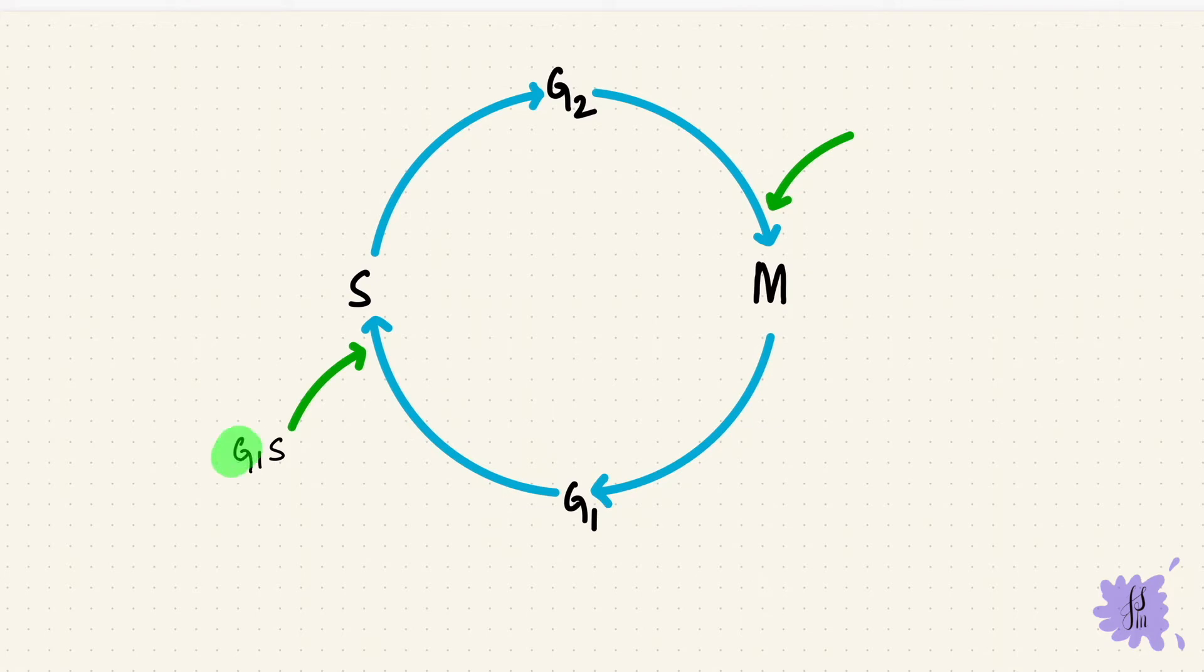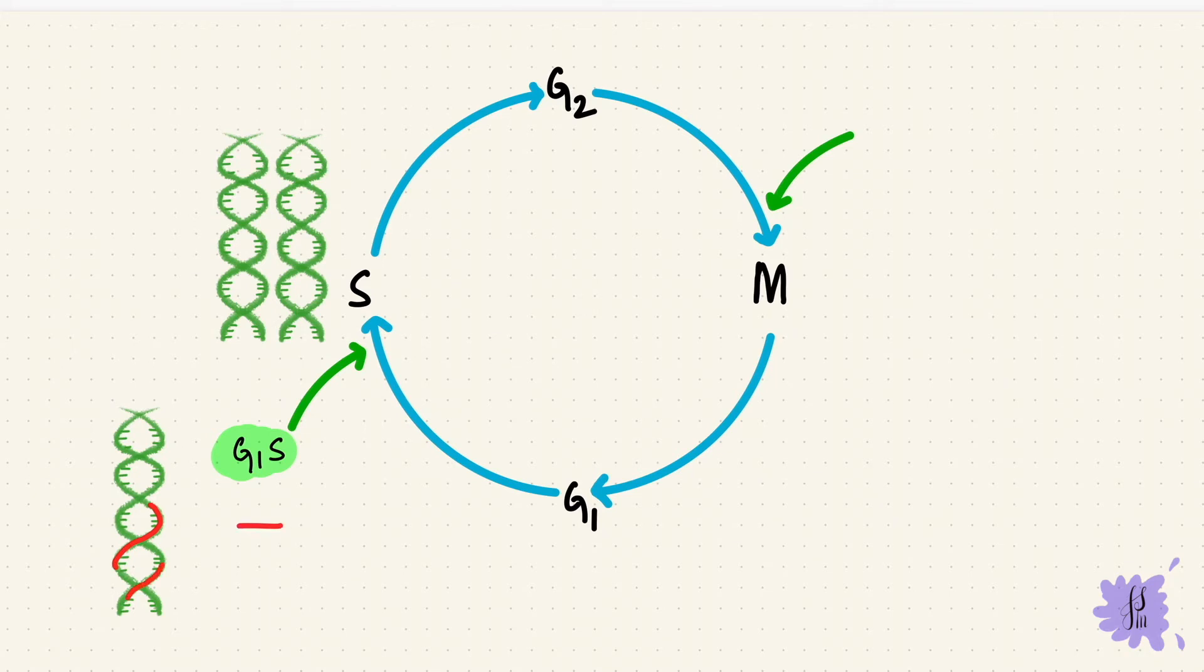So at the G1S checkpoint, there's a check to see whether the cell has grown, does it have enough nutrients, and most importantly, is the DNA okay? See after this, it's going to replicate. And it's got to make sure that what's getting replicated isn't damaged DNA. If there's something wrong, it has to stop the cycle and try to repair the DNA. If that can't happen, if the DNA is too damaged, then the cell undergoes apoptosis.